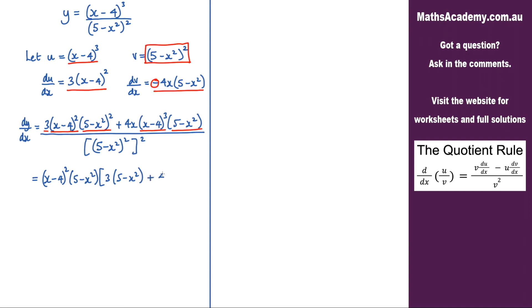Then we've got the 4x term. I've got an (x minus 4) squared already factored out, but I need a cubed, so I need to multiply by (x minus 4). And we've already got the (5 minus x squared) factored out, so we can finish there. That is all over (5 minus x squared) all squared and then squared again, so that's to the power of 4.